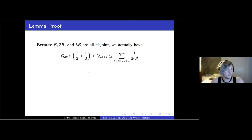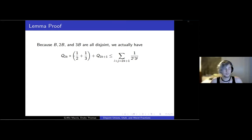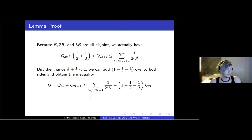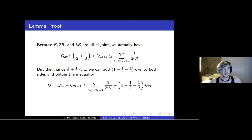One-half plus one-third is strictly less than one. So we can add a positive coefficient of q_{2k} to both sides and obtain the inverse sum over the red and blue line together on the left side. This bottom inequality — q standing for the sum over the red plus blue line — is less than or equal to a somewhat gross-looking sum. The important part is that the coefficient on q_{2k} on the right-hand side is positive. So to get the best possible bound, all we need to do is maximize q_{2k}.